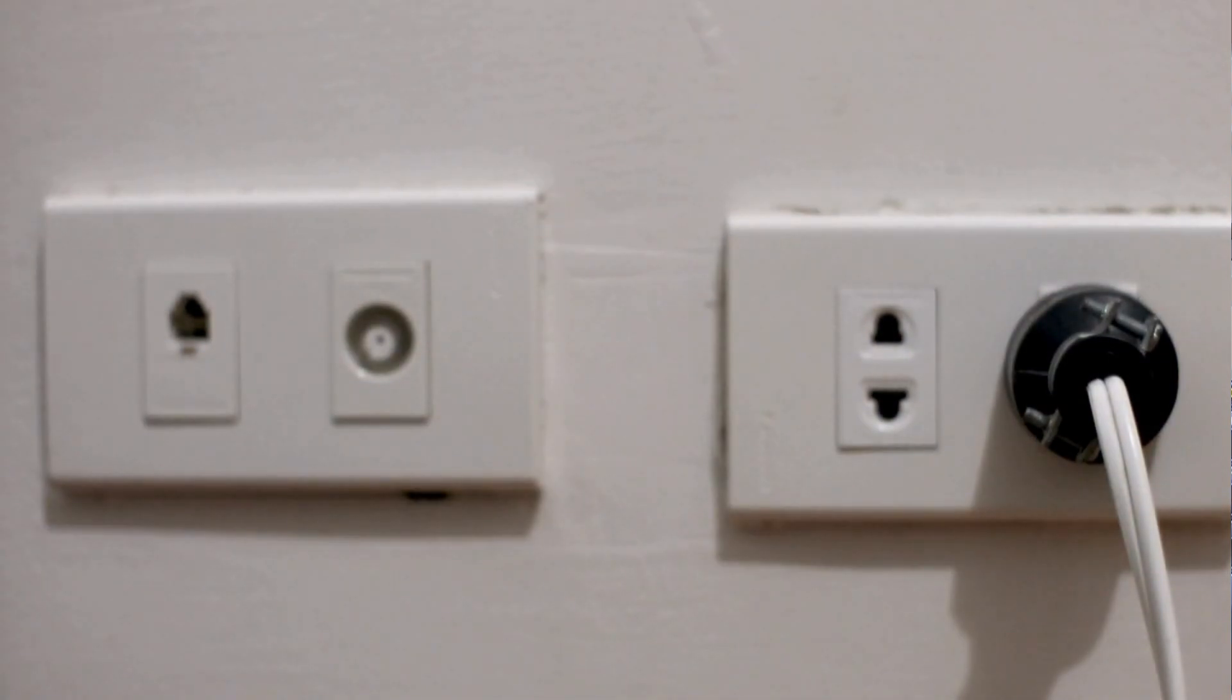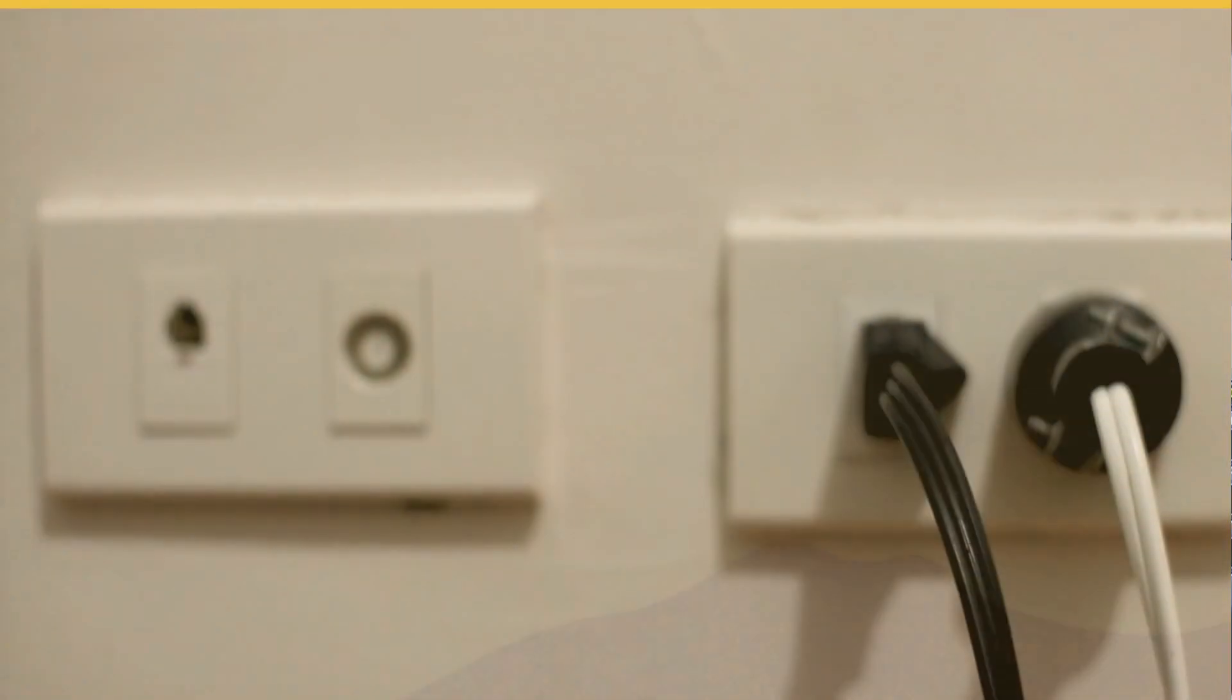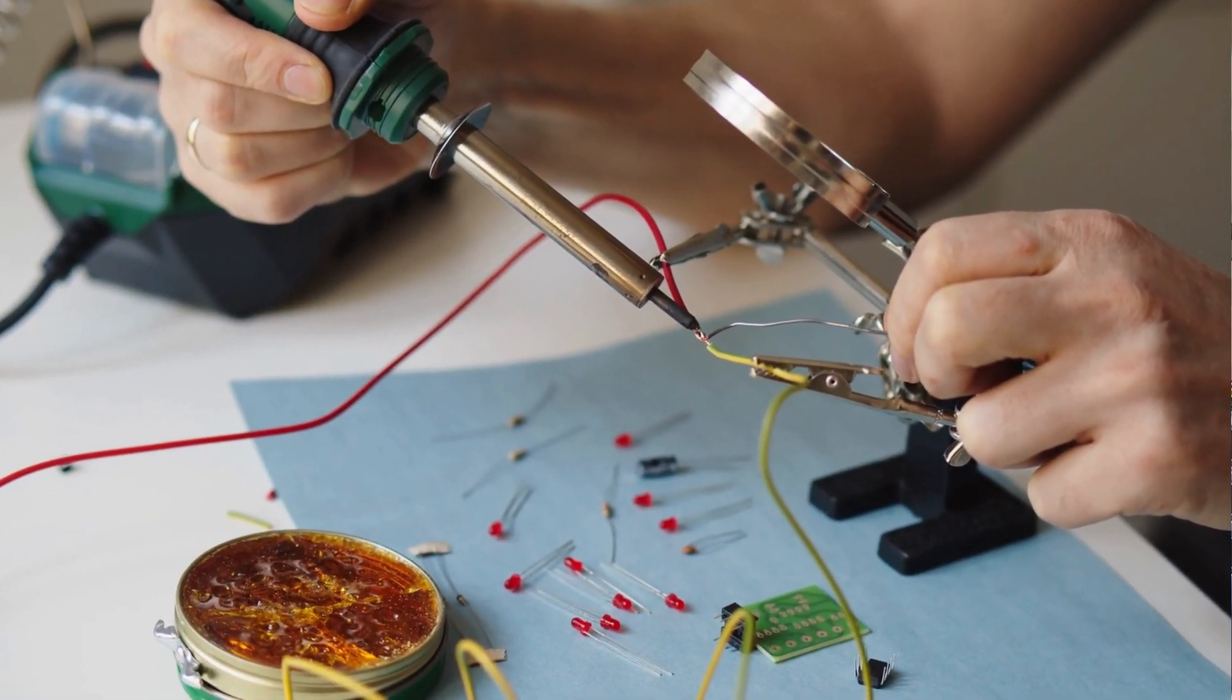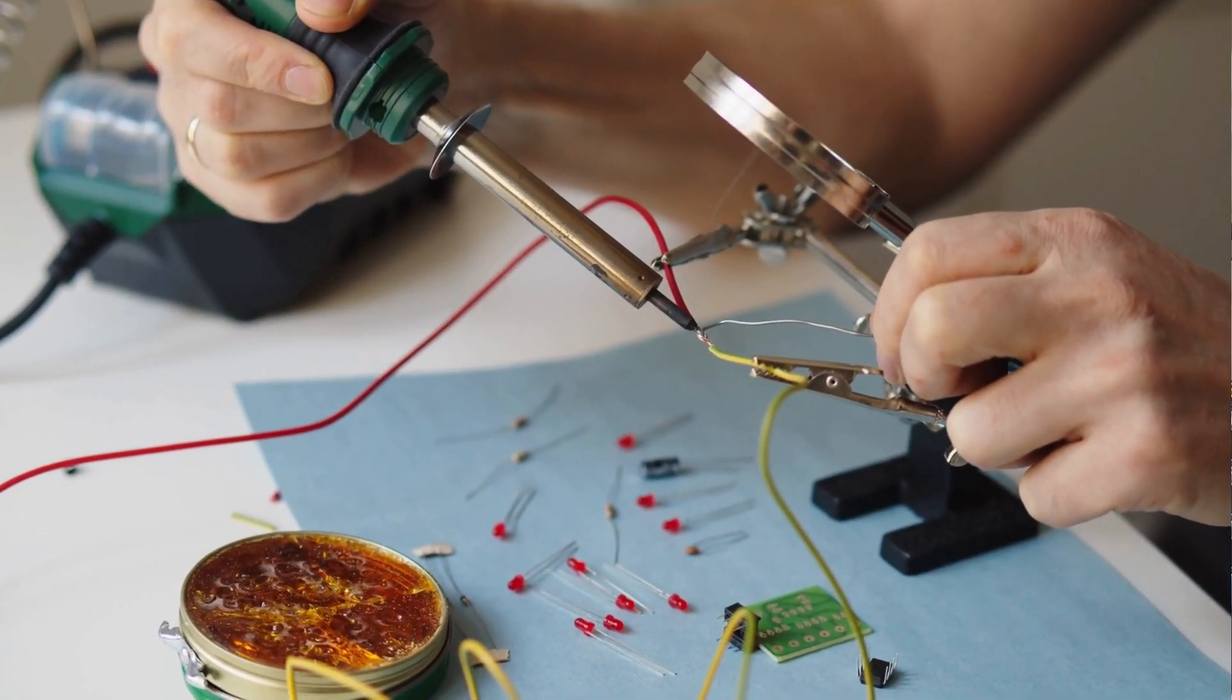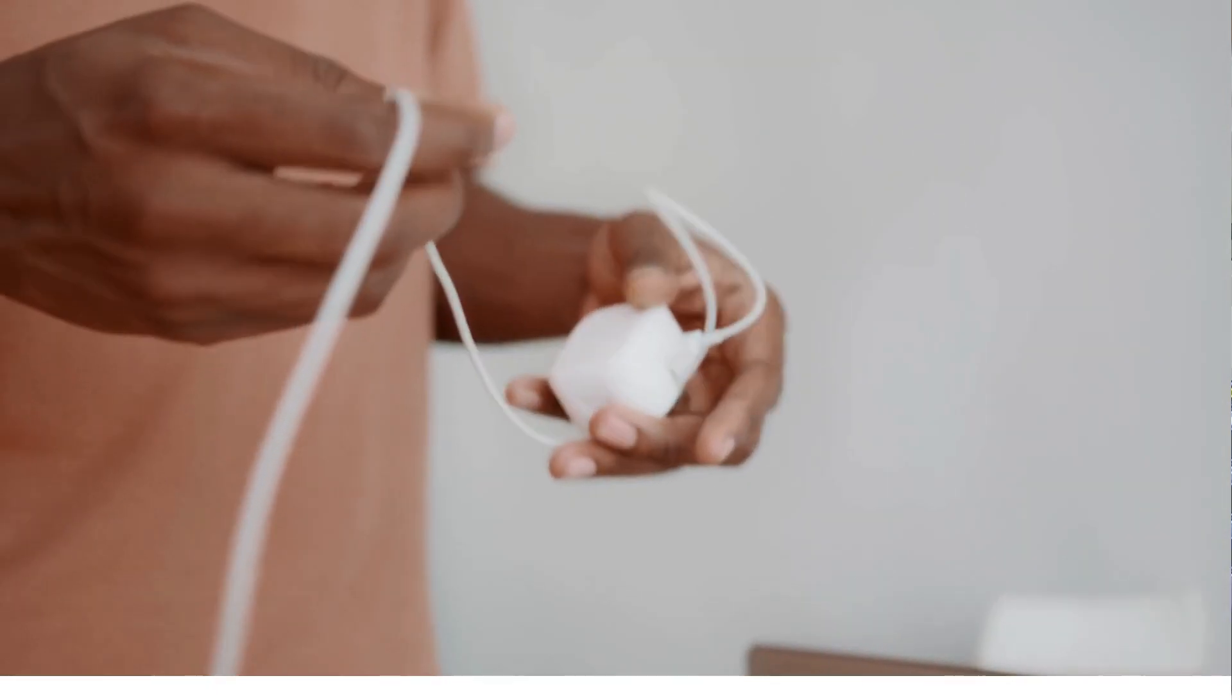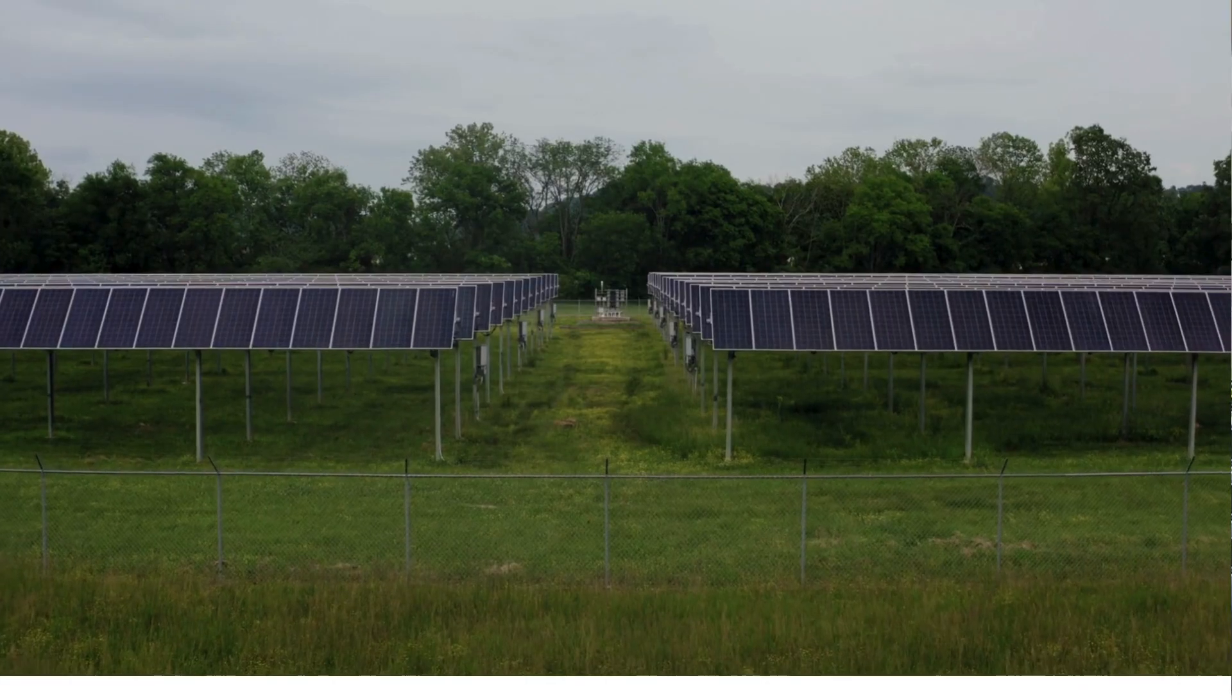Now, here is why it gets interesting. Even though our homes and offices are powered by AC, many devices internally convert this AC to DC, like laptop or phone chargers. But have you ever wondered why? Well, it is because most electronic circuits require DC to function properly. You might have seen the little box or the charging brick on the charger. It is actually converting AC from your wall into DC for your devices.